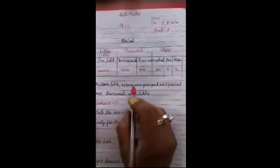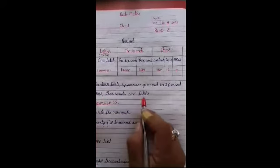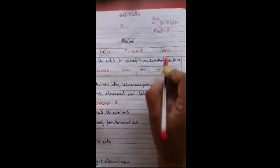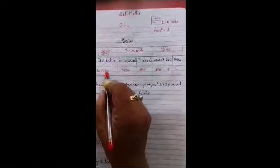In above table, six places are grouped in three periods, ones, thousand and lakh. Yarni ones mein hundred, tens or ones, thousand mein ten thousand and thousand, and lakhs mein one lakh.